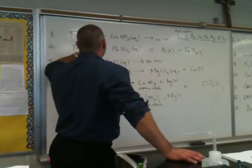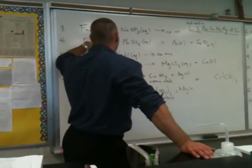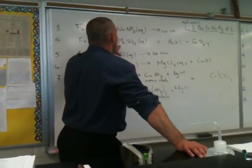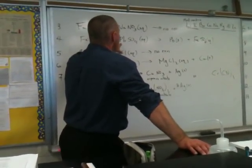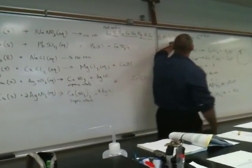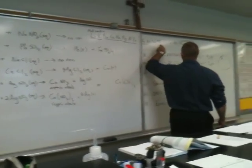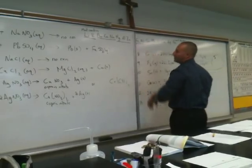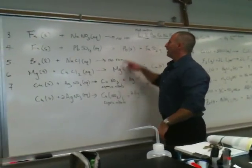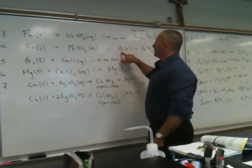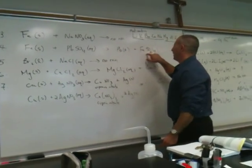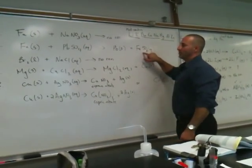In the fourth example, we have iron reacting with lead sulfate. In this case, iron is higher than lead — lead appears lower on the activity series — so iron is able to displace lead, and you get elemental lead and iron sulfate forming.